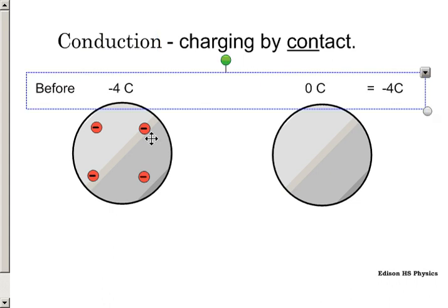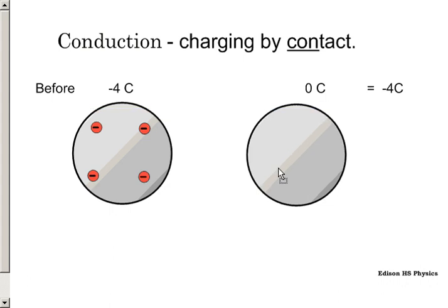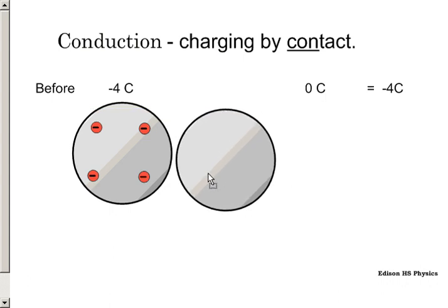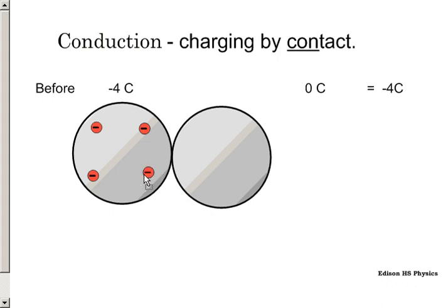When we start out, we have negative four coulombs of charge. Each one of these red dots, we're going to call one negative coulomb of charge, and zero over here in the empty sphere. When we bring the empty sphere into contact with the charged sphere on the left, electrons are going to flow because all of a sudden there's more space for them to go into.